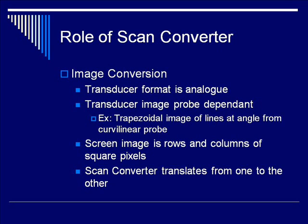Why do we need the ultrasound scan converter to change the image from the transducer's form? Remember, the transducer uses an analog form of image — varying voltages — which doesn't really display well or make things clear for us to see. Also, the size and shape of the transducer image is probe-dependent. The image for a curvilinear probe may be a weird-shaped trapezoid with large gaps between lines at the edge. The screen image you see on your display is rows and columns of square pixels, which doesn't translate well from that format. So the scan converter translates from one to the other.